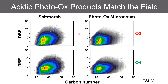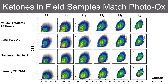Taking it a step further, we characterize the acidic species in negative ion electrospray and compare field samples on the left with photo-only microcosms on the right. For the O3 and O4 classes, as well as all other classes, we see a very similar distribution in carbon number and DBE, further supporting that photo-oxidation is generating these materials. Finally, isolating the ketone transformation products and characterizing them in positive ion electrospray, we see a photo-only microcosm on top and three field samples from three different locations and time points — a very clear similarity between what is generated in the microcosm and what is observed in field samples.